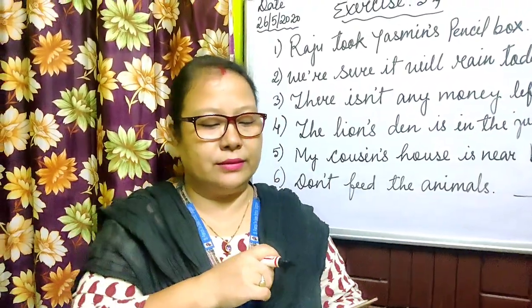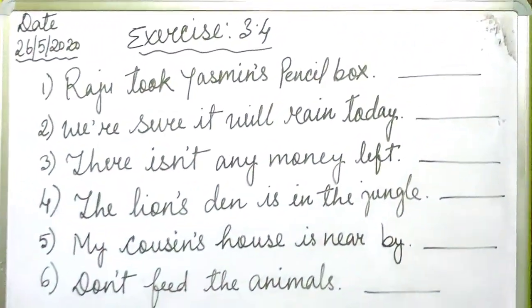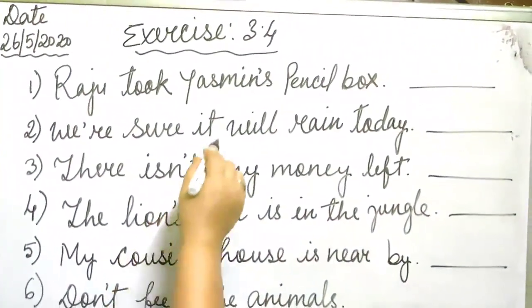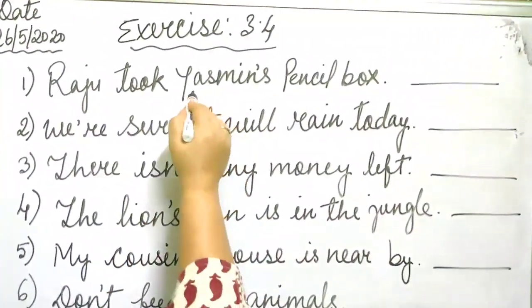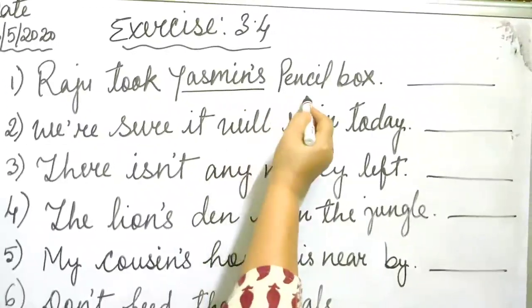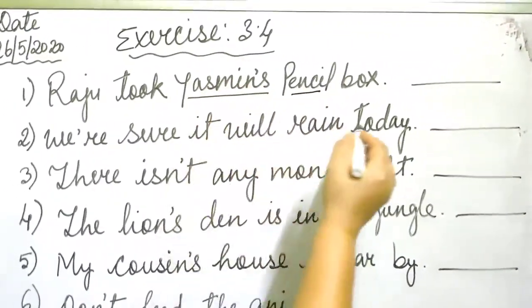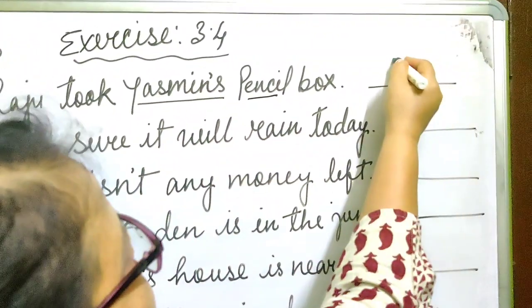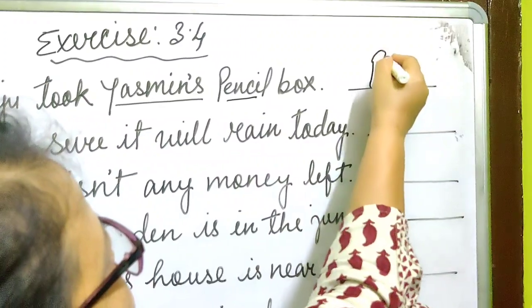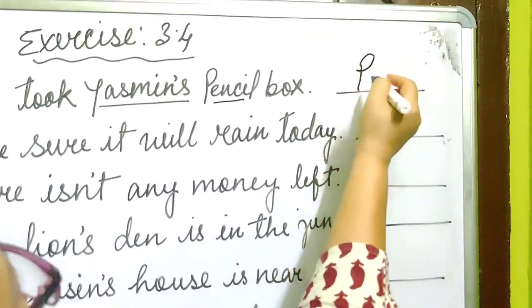Write P-O for possessives and C for contractions. Underline the word that has the apostrophe in each case. One is done for you. So look at the sentence: Raju took Yasmin's pencil — whose pencil? It belongs to Yasmin. So it will be possessive — write P-O.